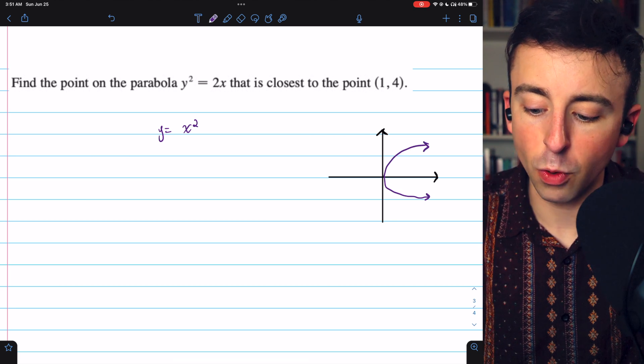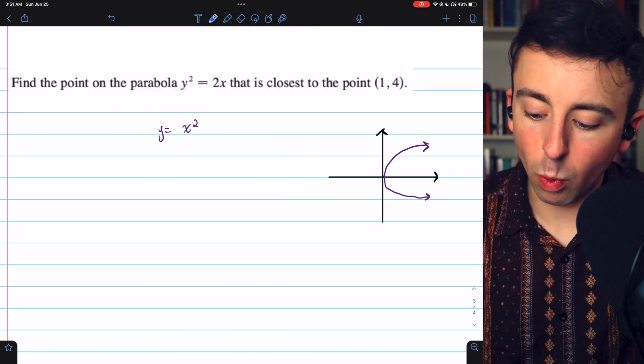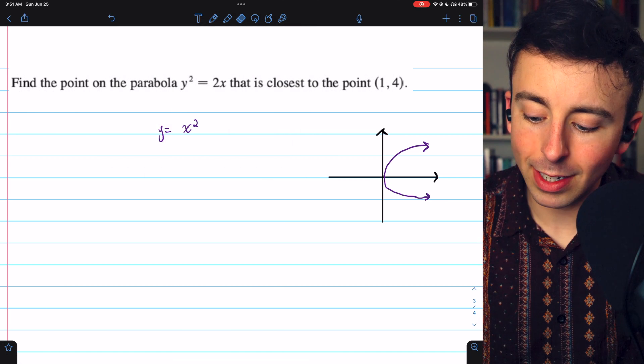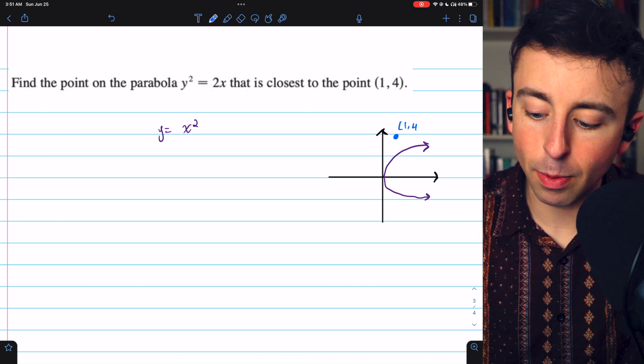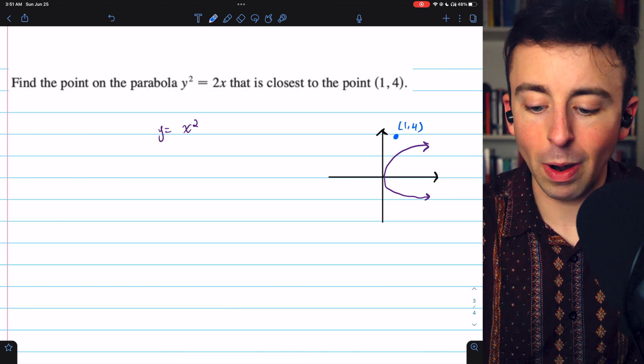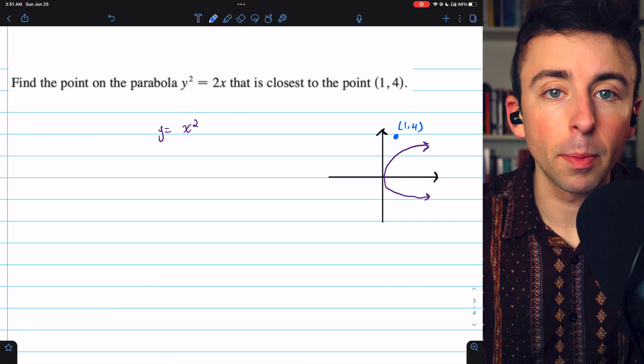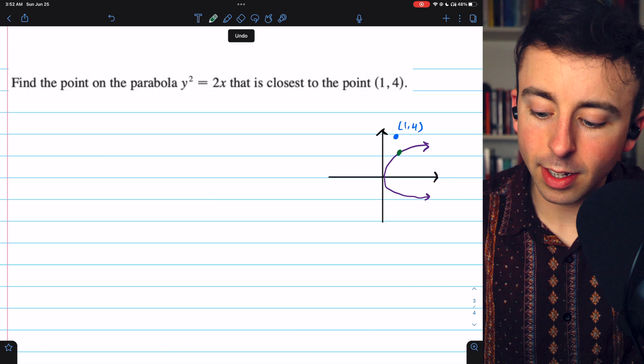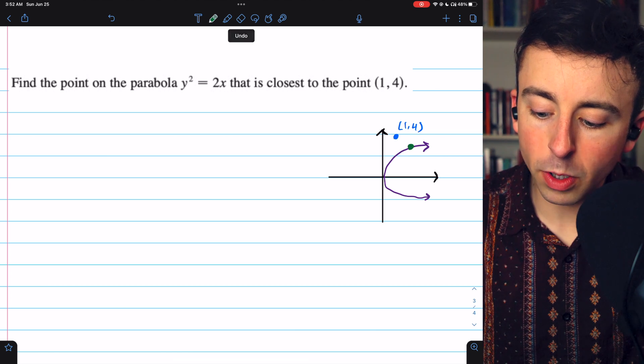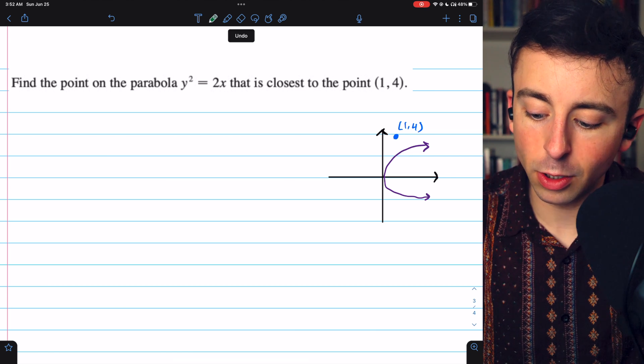The specifics of the sketch aren't too important. Let's say the point (1,4) is maybe right here and we're trying to minimize the distance between the parabola and this point, or rather we're trying to find the point on the parabola with minimum distance. Any point on this parabola has some distance from the point (1,4). We're trying to find which point is closest.